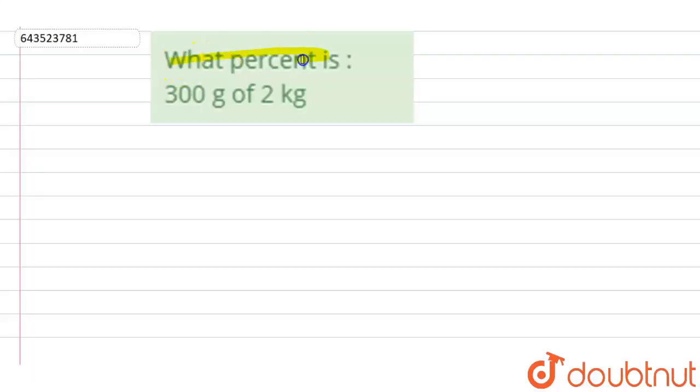The question says: What percent is 300 gram of 2 kg? So we know that whenever we are performing any operations, the value should be in same unit. Here there are two units - gram and kilogram. We know that